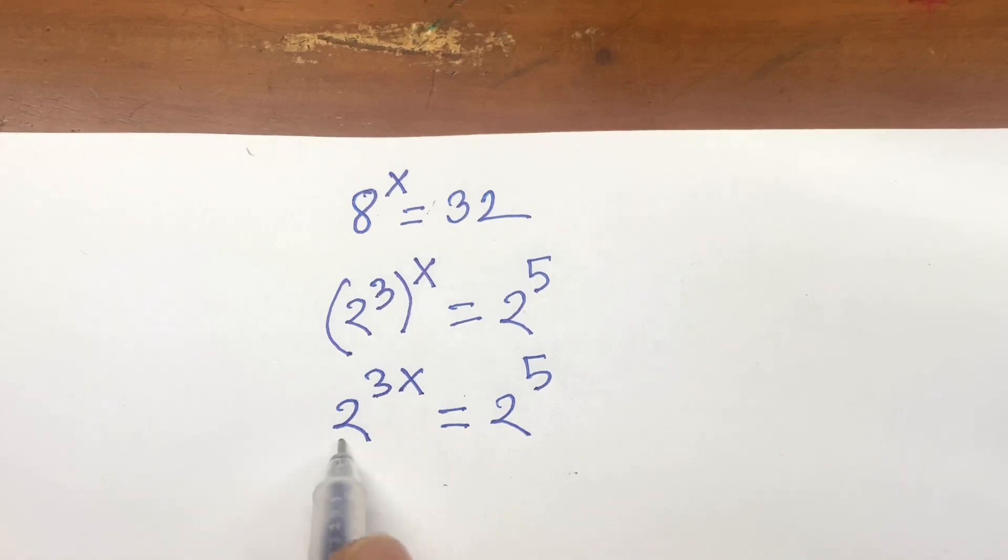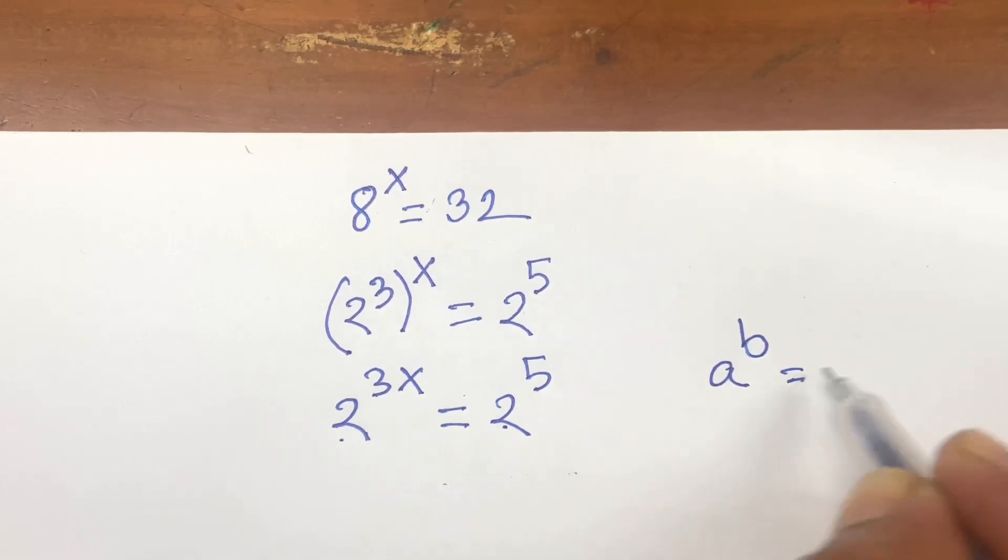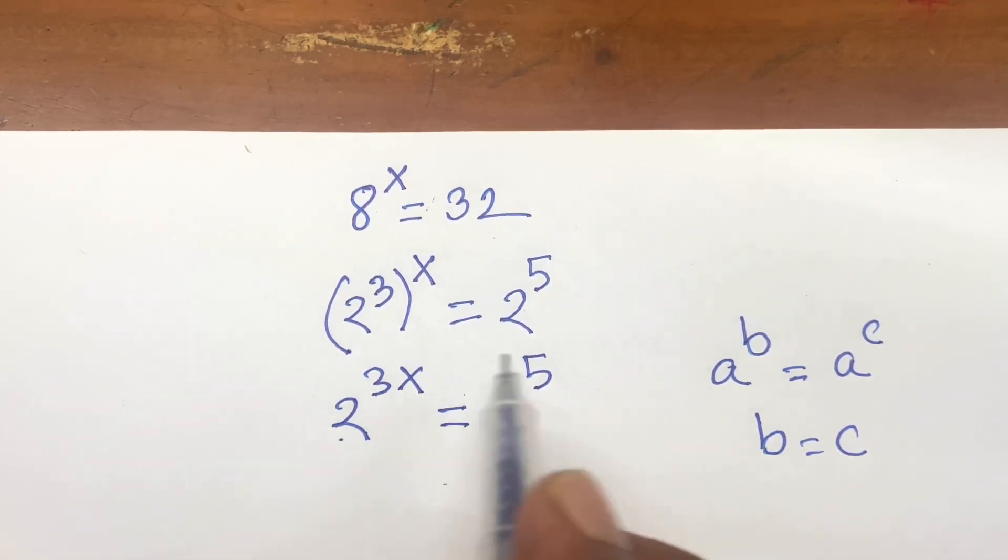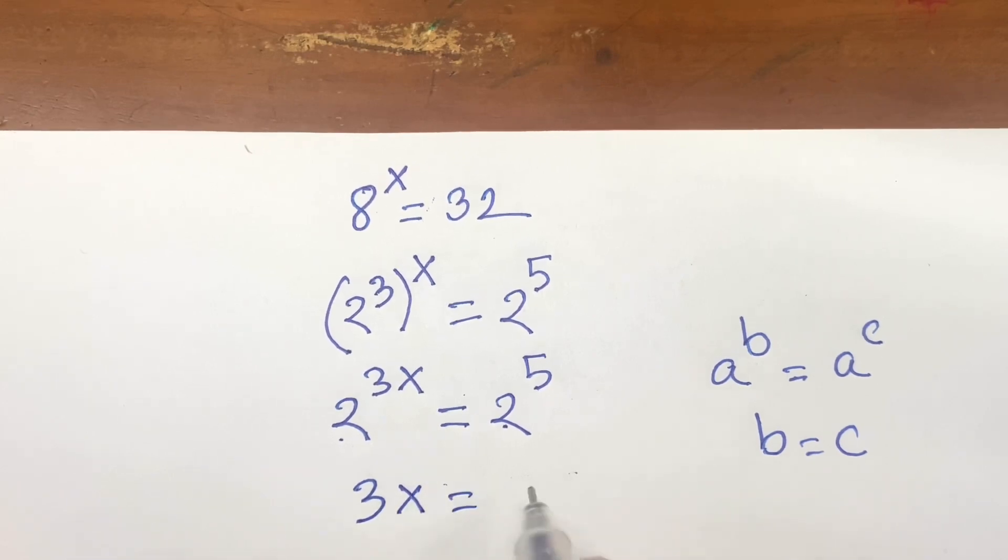Now, here the base is the same. We know that the exponential law: A to the power B is equal to A to the power C, here B is equal to C. So this base is the same, so these exponents are equal. So I can say 3x is equal to 5.